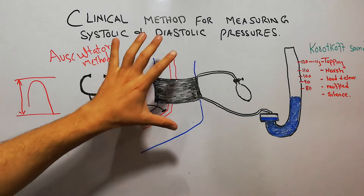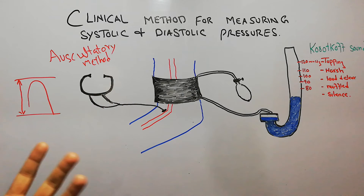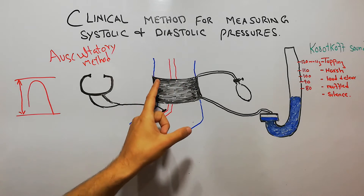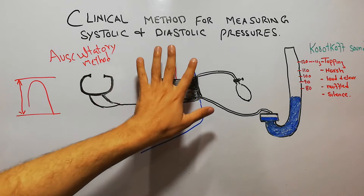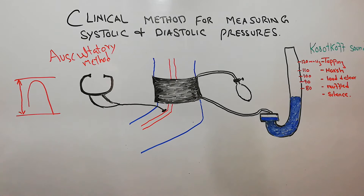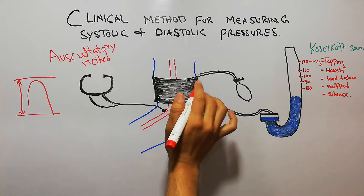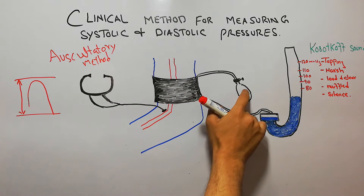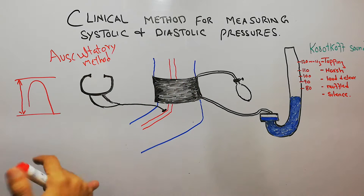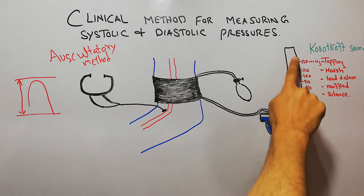In this method, the patient is sitting in a chair comfortably and must have rested for a while. A blood pressure cuff is applied on the arm of the patient. Inside the cuff is a bladder which is filled with air with the help of a pump. When the bladder is being filled, the pressure that increases inside the cuff is recorded with a meter.